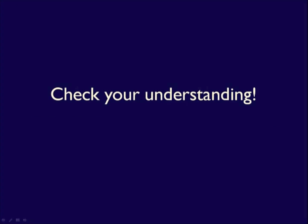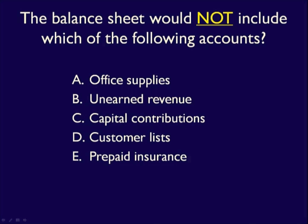Check your understanding: which of the following accounts would NOT be included on the Balance Sheet? Office supplies are an asset — owned with future benefit — so they would be recorded. Unearned revenue represents goods or services owed to customers and appears as a liability. Capital contributions are direct investments by owners appearing as equity. Prepaid insurance is owned and provides future benefit, so it's an asset. The correct answer is customer lists developed internally — they are not listed on the Balance Sheet because they are not due to a financial transaction with an outside party, so they would never appear there despite being valuable.